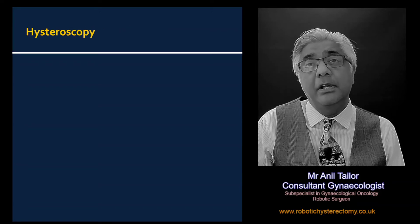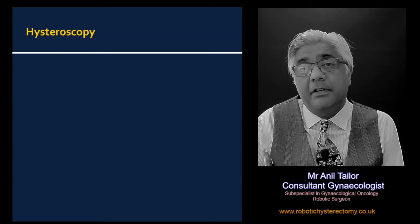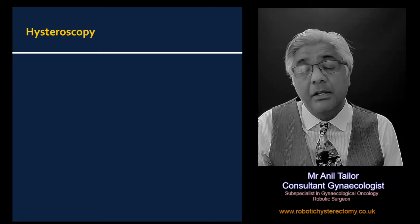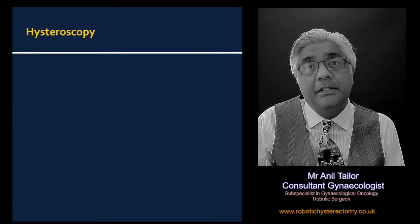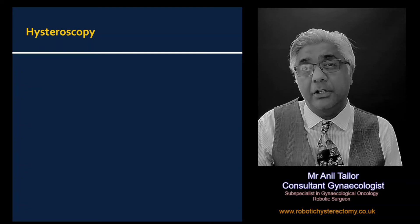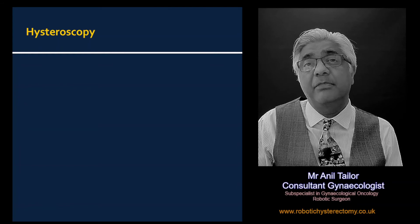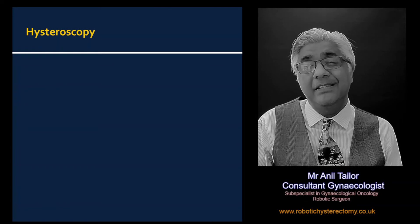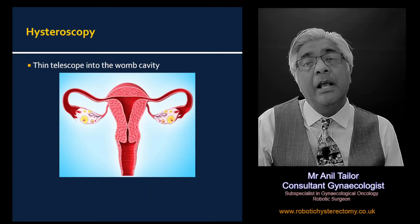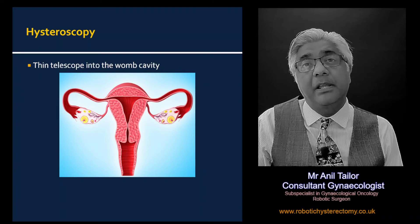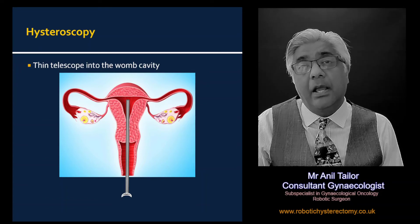In my practice, if the scan shows the womb lining is thickened — I use 5mm as a cut-off, though some clinicians use 4mm — then the next step is something called a hysteroscopy. A hysteroscopy is an examination of the womb cavity with a camera, or a long thin telescope inserted into the womb. In most cases it is done in outpatients.